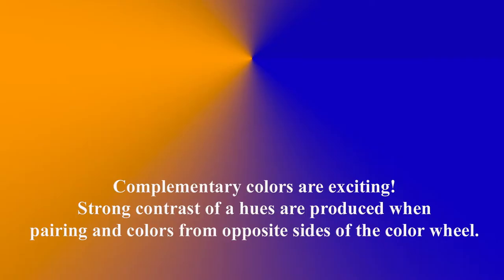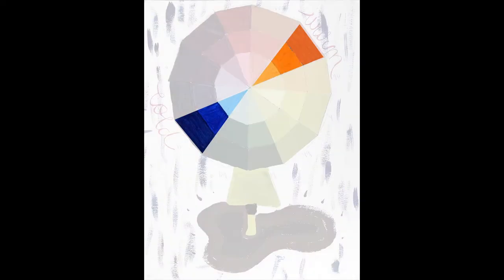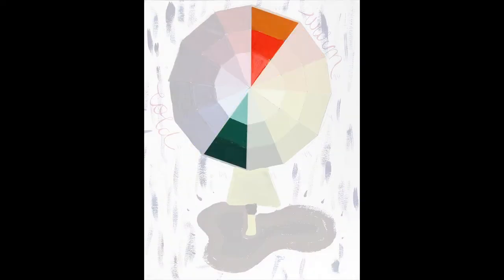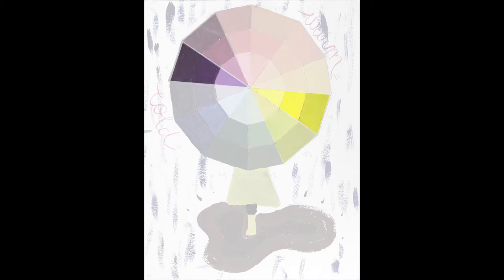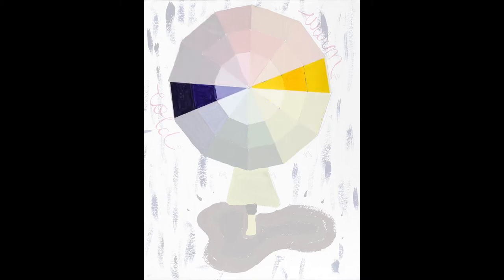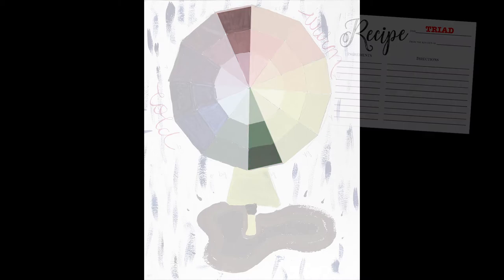Complementary colors are exciting. Strong contrast between hues is produced when pairing colors from opposite sides of the color wheel. A complementary scheme is used to grab the viewer's attention. Select any colors opposite each other on the color wheel to use this scheme. Consider muting or toning down bright colors so it's less jarring for the viewer.